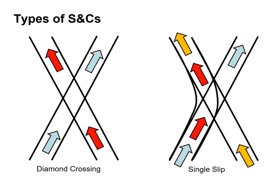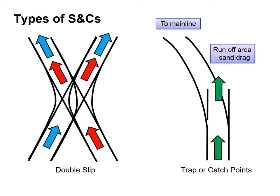Here you can see a diamond crossing on the left with the coloured arrows showing the two alternative routes. On the right-hand side we have what's called a single slip — on one side there is only one route, but on the other side we can either take the blue route or throw the switch and travel the red route. On the left-hand side we have a double slip with two alternative routes — approaching from the left, we can turn off to the left or continue diagonally forward; following the red arrows, we can continue forward or turn off to the right.